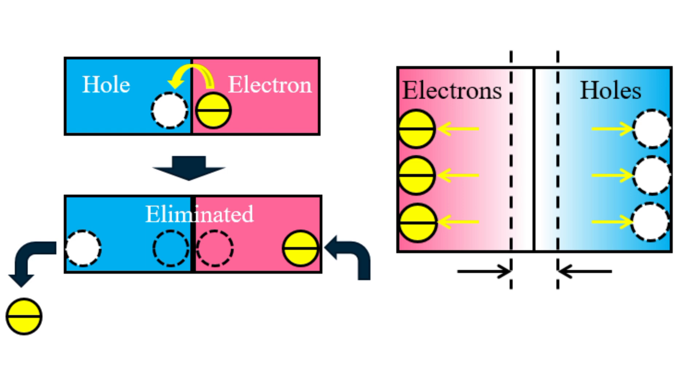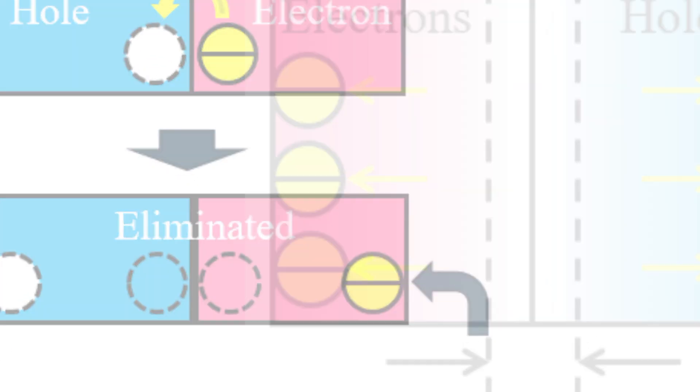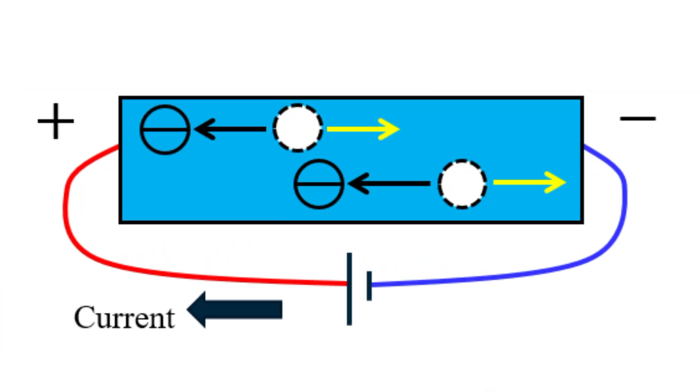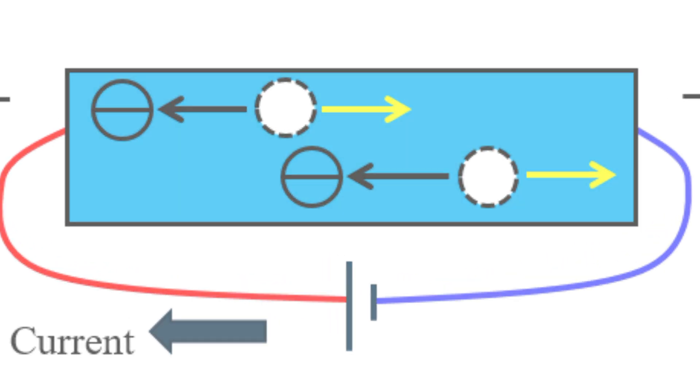This is a very important note. The thing is, you have to remember that both electrons and holes are movable in nature. That means they can move from one atom to another atom.